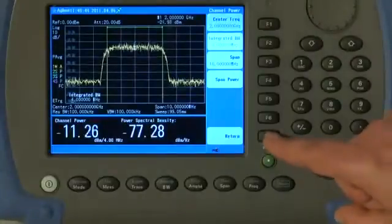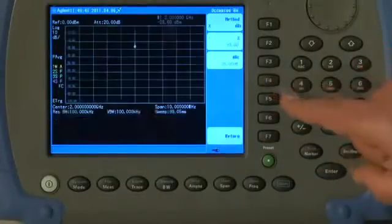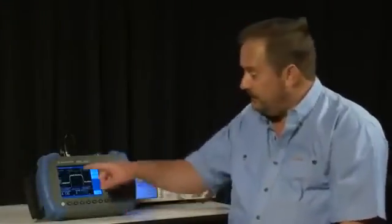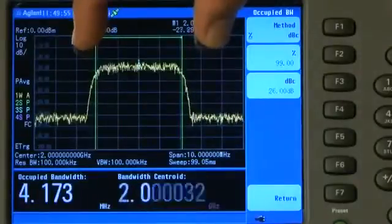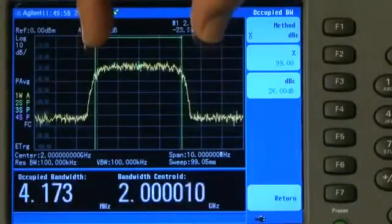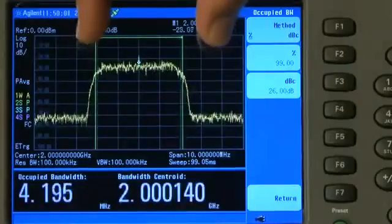If I press Return, and press Occupied Bandwidth, now this is very similar to channel bandwidth. It looks almost the same, except you will see now that the green markers are not fixed at a 4 MHz channel separation. They are actually moving and adjusting in real time.